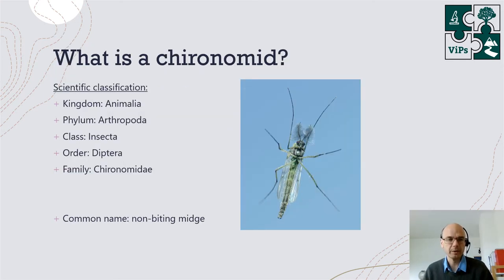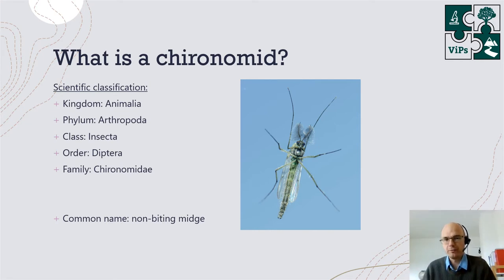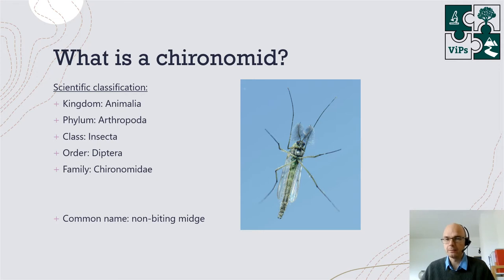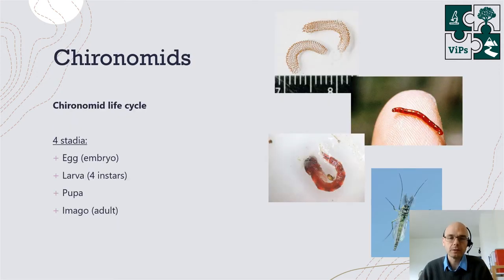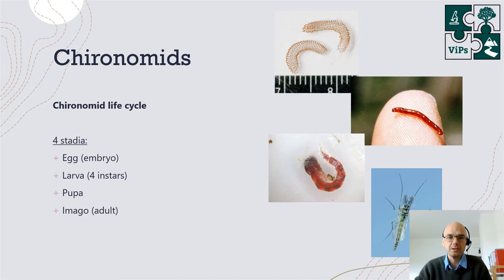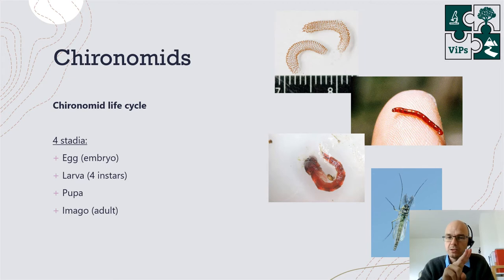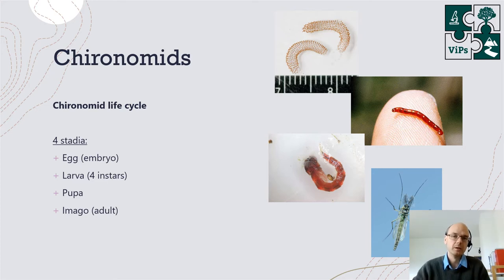So what is a chironomid? Basically, a chironomid is an insect — it's a bi-winged fly and a common name would be a non-biting midge. It's a family within the order of the Diptera, the bi-winged insects. And as all dipterans, chironomids are so-called holometabolous insects, meaning they have four individual life stages: they start as an egg, then become a larva (itself with four sub-stages called instars), then pupae, and finally adults, which are called imagos in entomological terms.